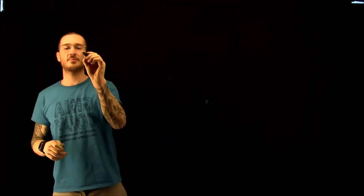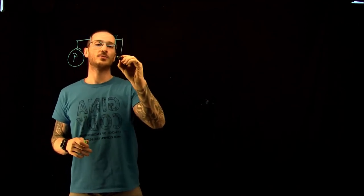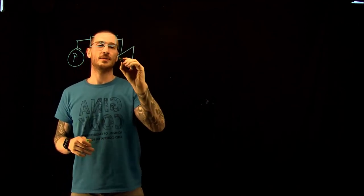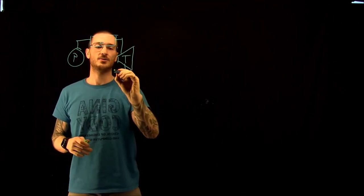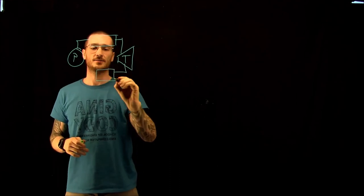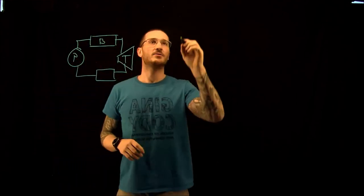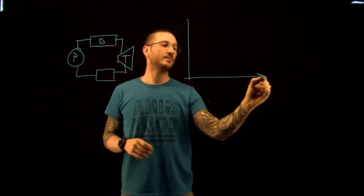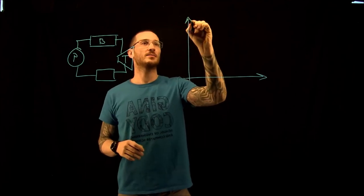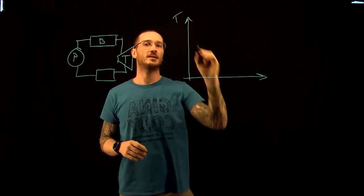The first thing we're going to do is draw a little diagram of what we're looking at. We have a pump that goes to a boiler, then through a turbine, into a condenser. And if we look at our T-S diagram, it's going to look something like this.